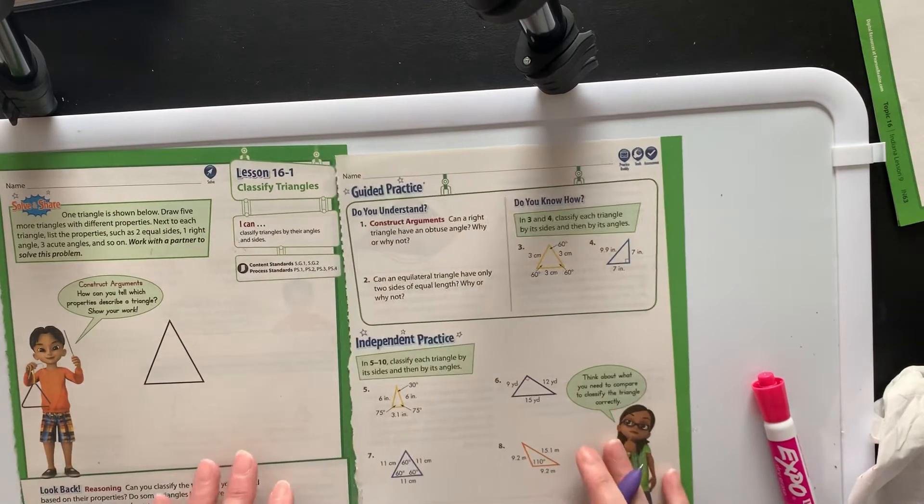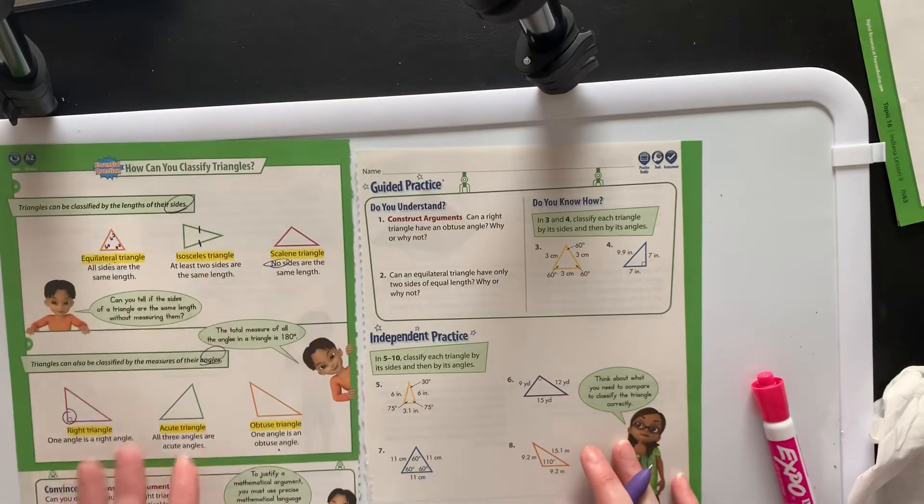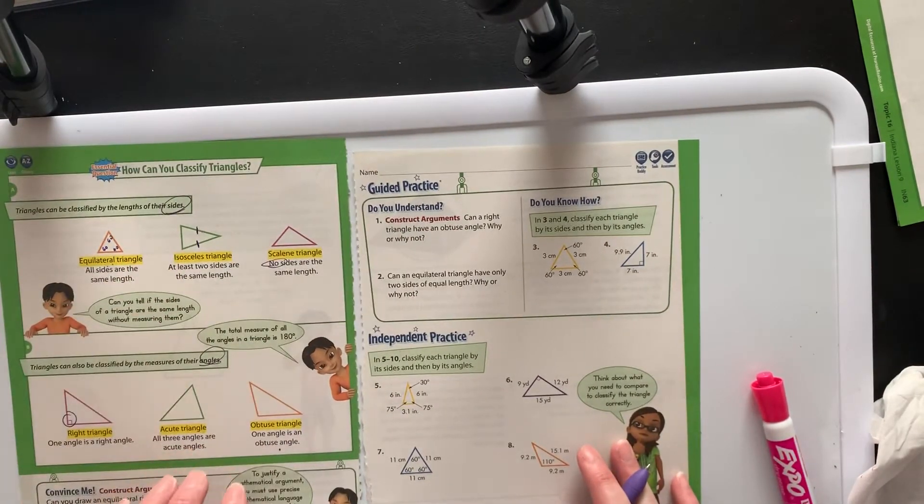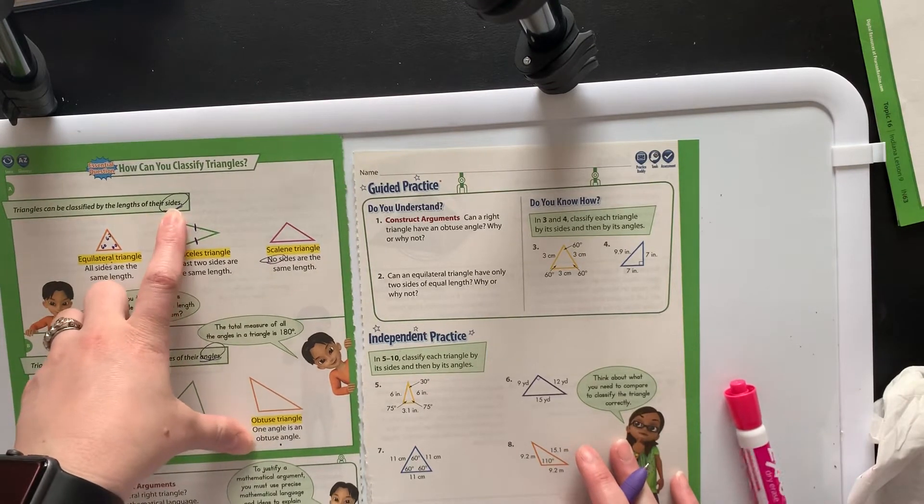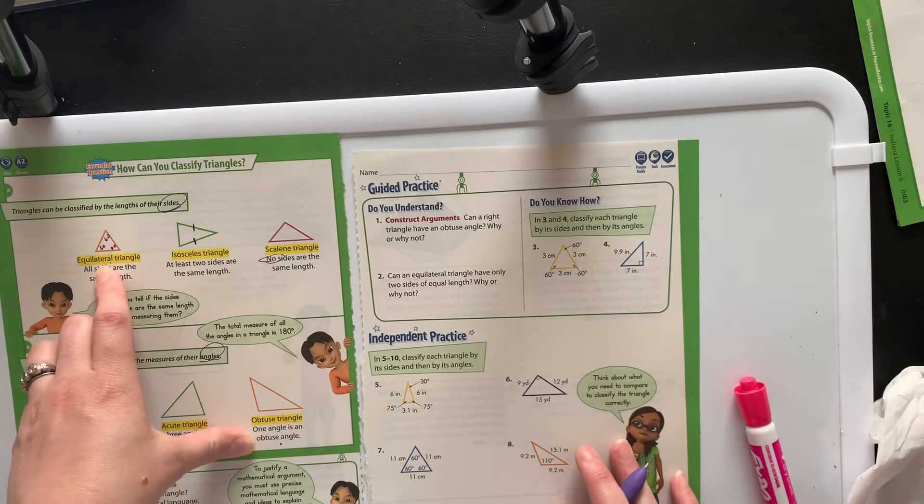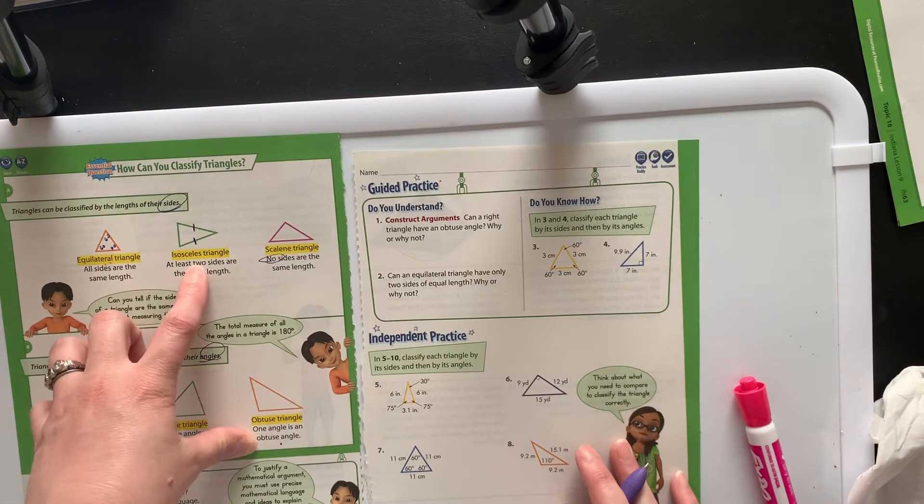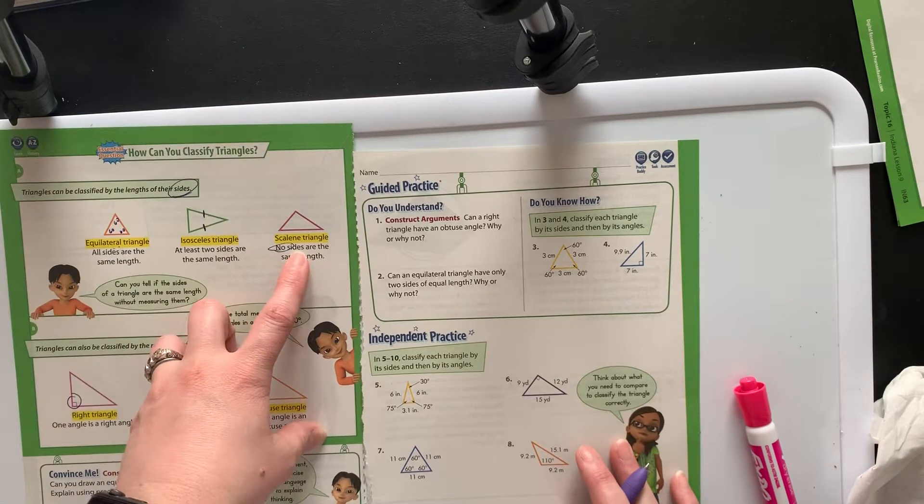We are classifying triangles and I'm going to keep this little cheat sheet out because it's a really good way to remember that we can classify triangles by their sides as equilateral, all three the same, isosceles two the same, or scalene, none the same.